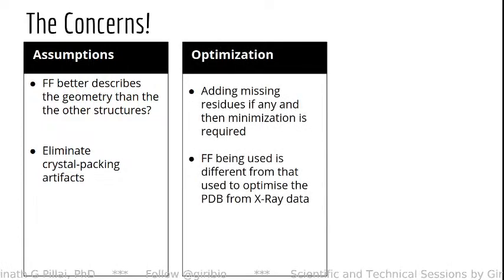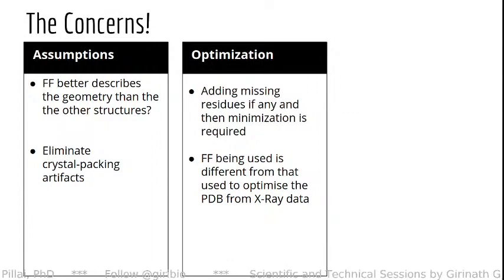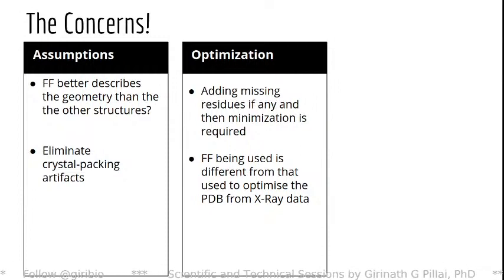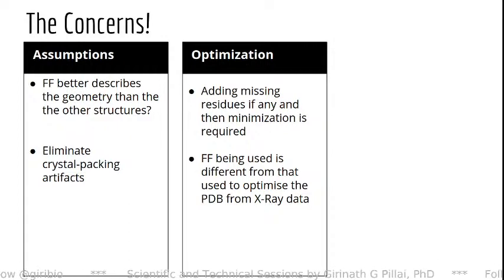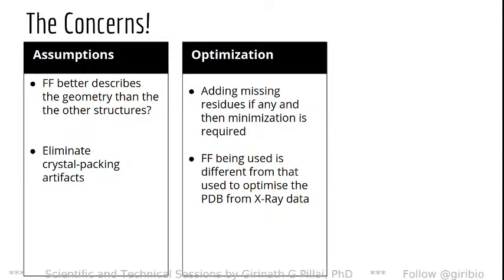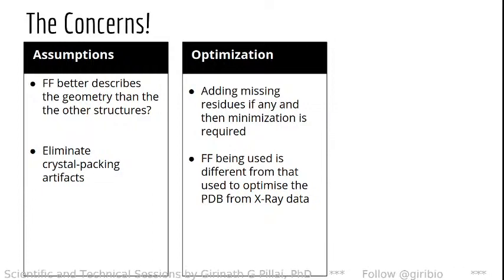We have to really think about when minimization is required. There might be missing residues in X-ray crystal structures or PDB files. Don't think that X-ray crystal structures are the most accurate ones — they are not. It all depends upon the electron density maps and how they are fitted properly to the coordinates of amino acids.